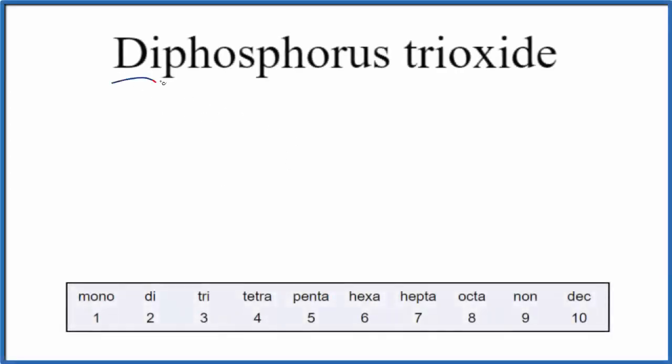In this video, we'll write the formula for diphosphorus trioxide. So the first thing we'll note is we have these prefixes, di and tri. That means we have a molecular compound.